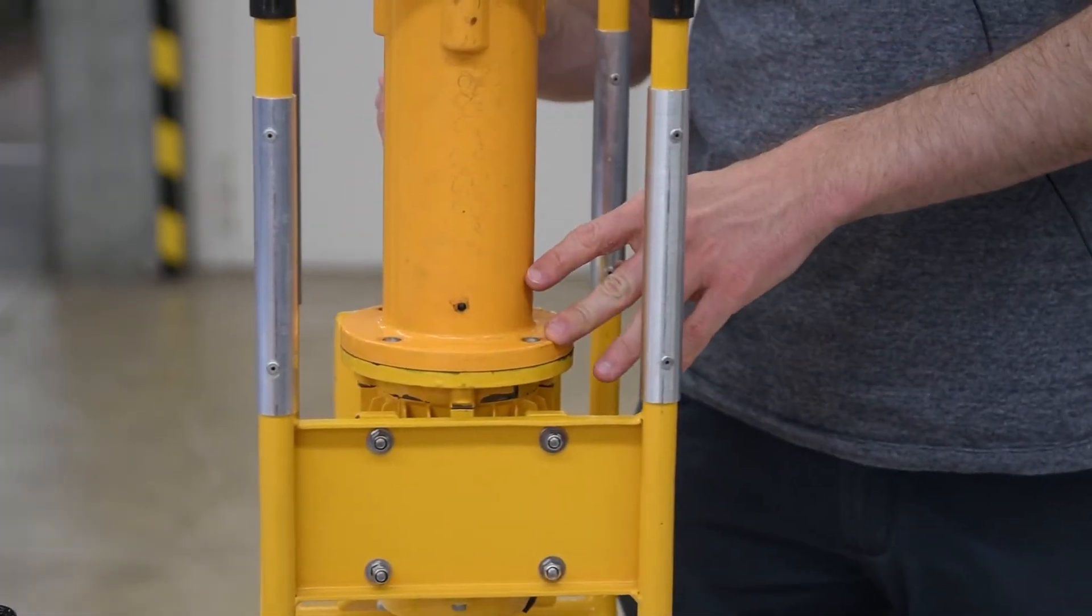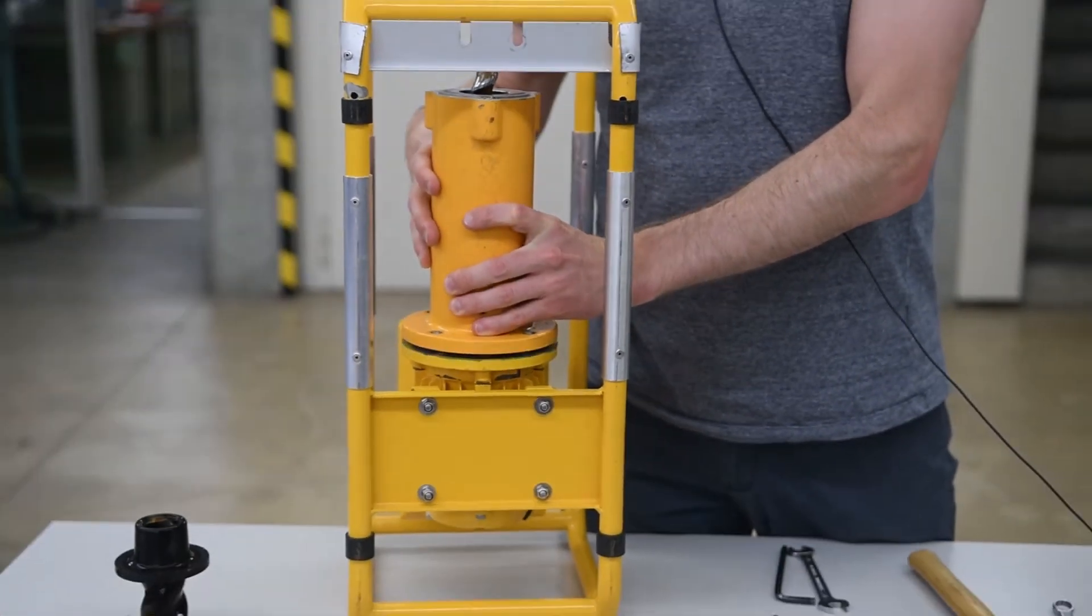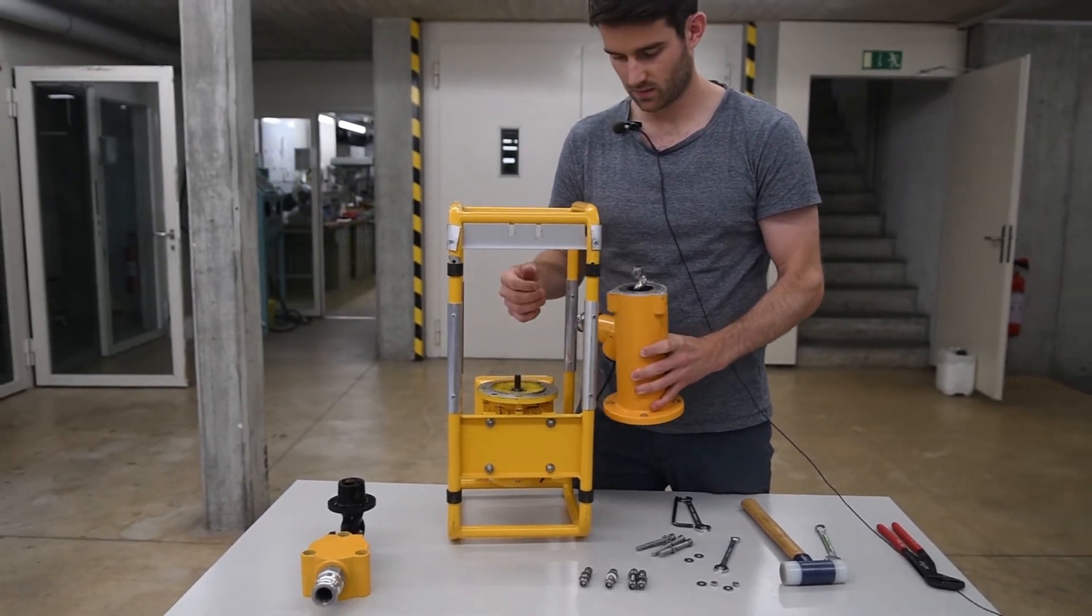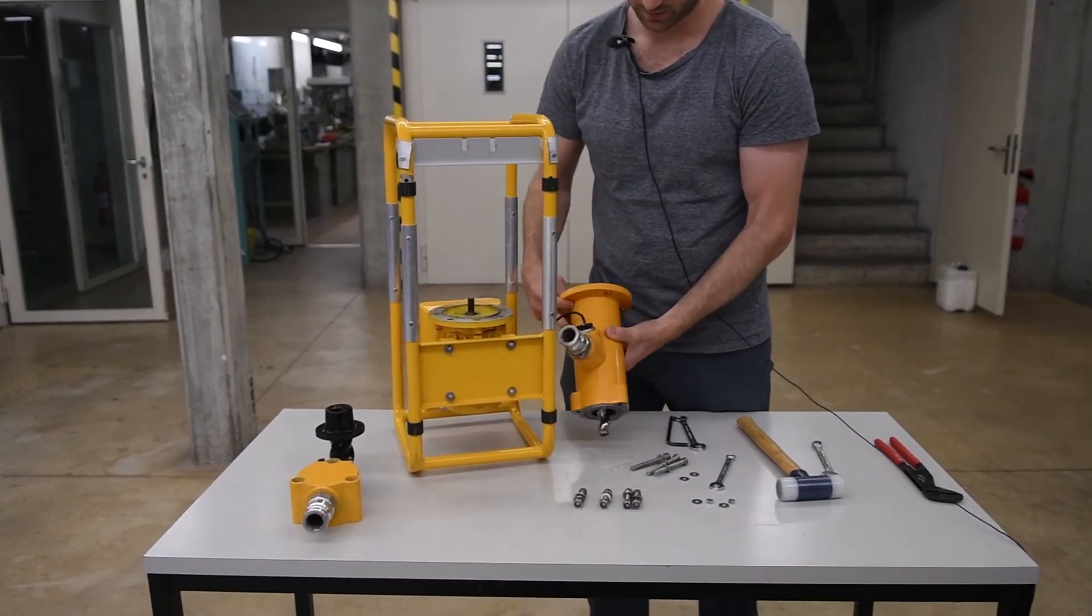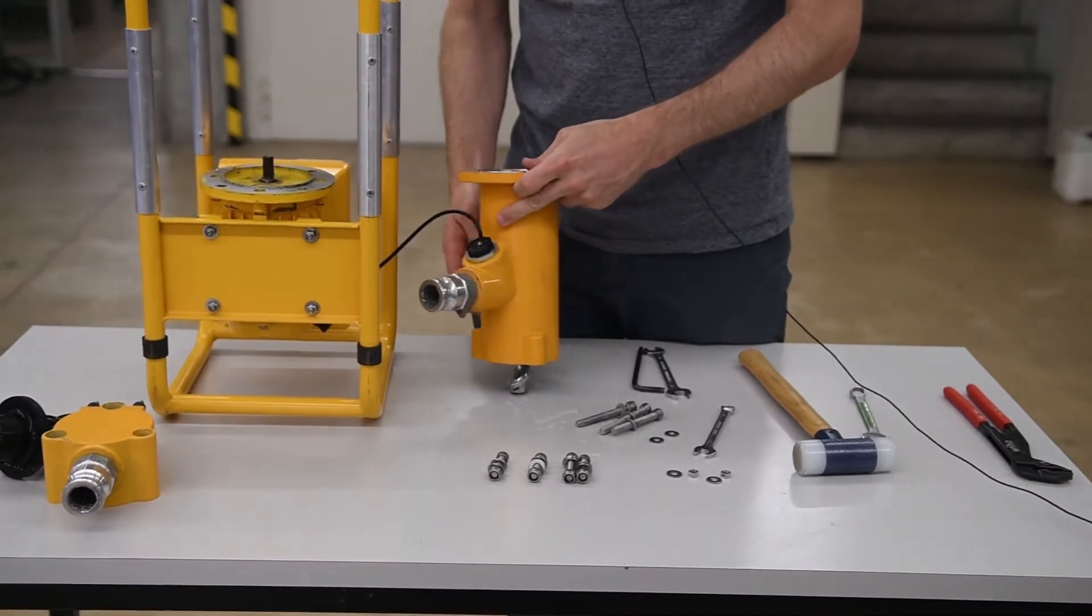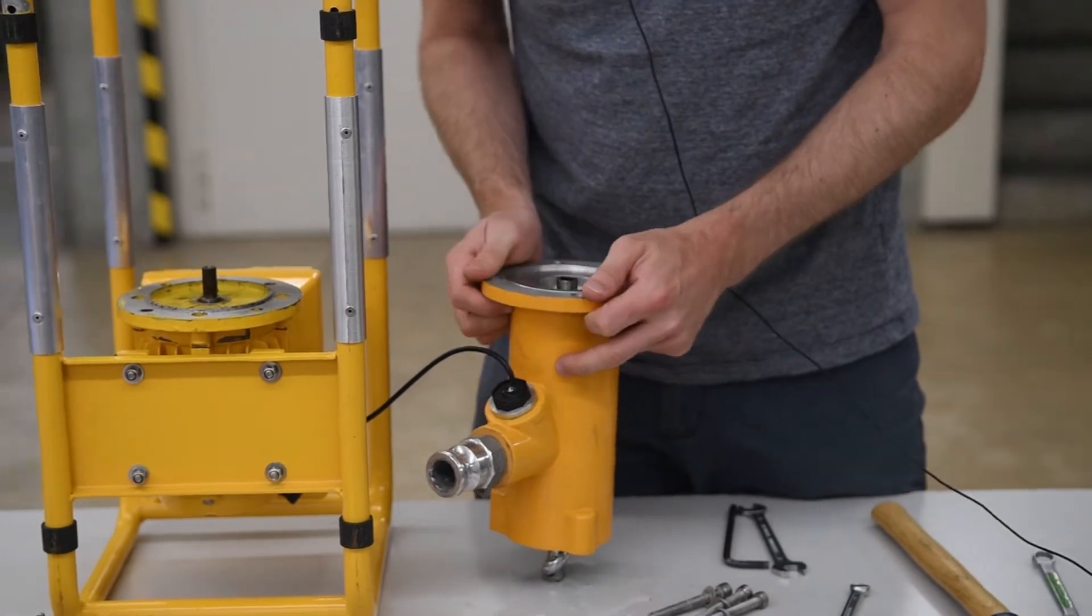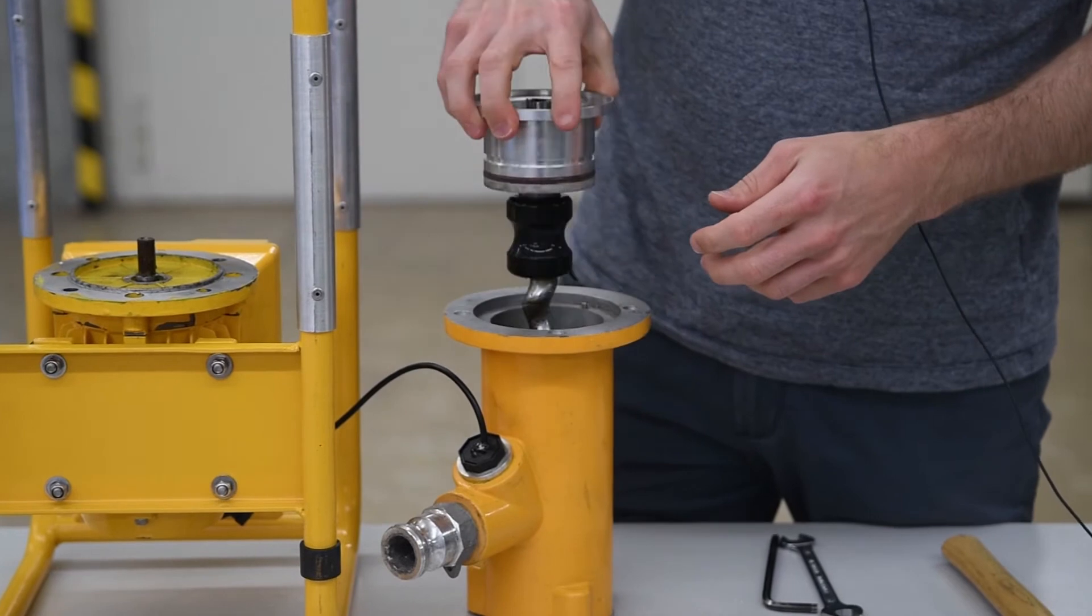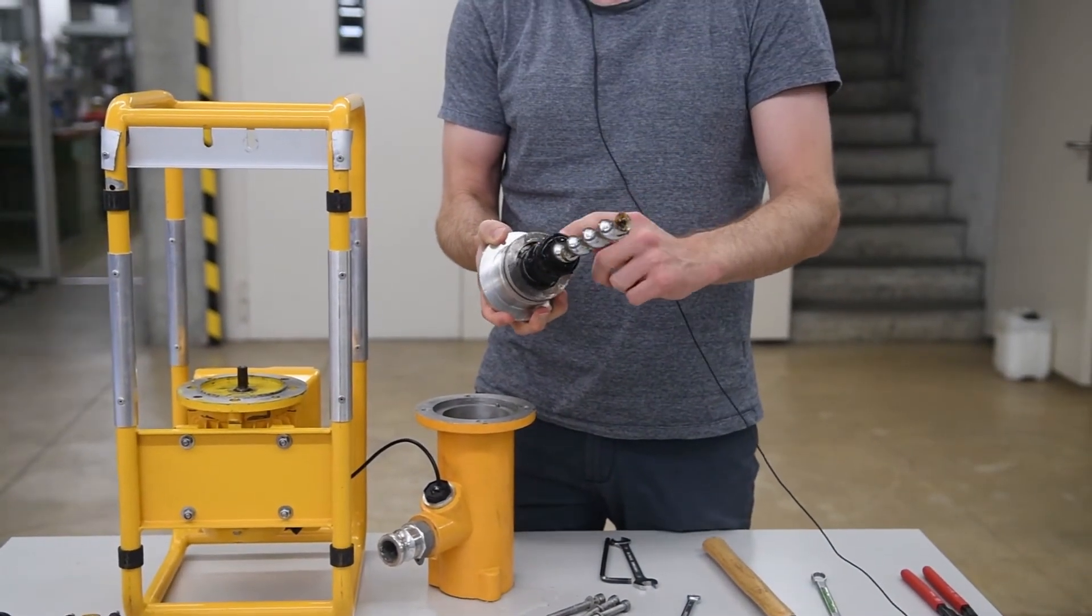Now we can remove the housing from the motor. The pump rotor and coupling will come out.